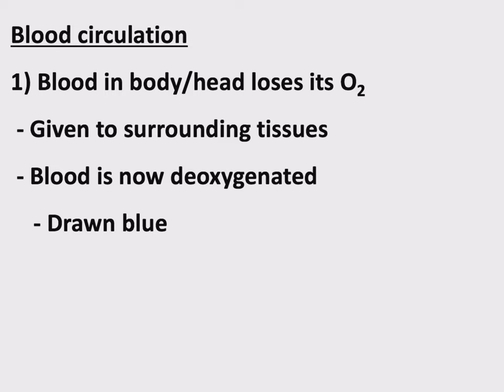What I'm calling step one: blood in the body and the head loses its O2. That's one of the many jobs of blood — to give the O2 it has been storing to tissues that need it. So the O2 is given to surrounding tissues. The blood is now what is called deoxygenated — it has given away its O2, and this deoxygenated blood is drawn the color blue.